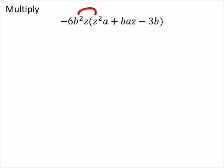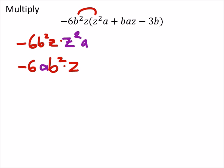So, using distribution, I've got a negative 6b squared z times the inside of that parenthesis. That's pretty bad, but z squared times a. And if I rearrange this...